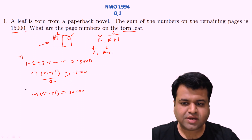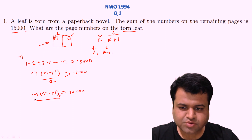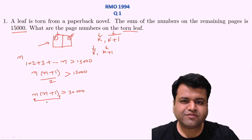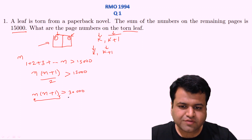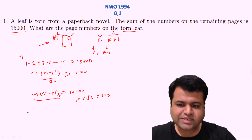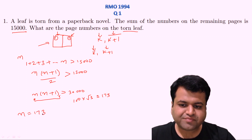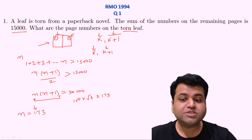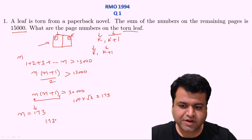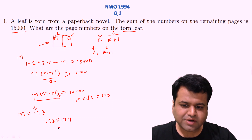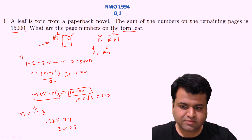Let's figure out the possible values of n such that n(n+1) > 30,000. This product is approximately a perfect square, so we can calculate the square root of 30,000, which is 100√3 ≈ 173. Let's check when n = 173: 173 × 174 ≈ 30,102, which is clearly greater than 30,000. So n = 173 is a valid value.